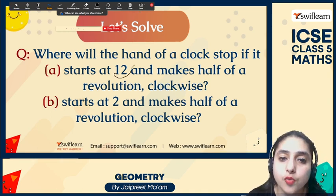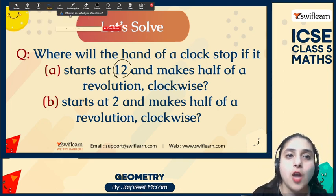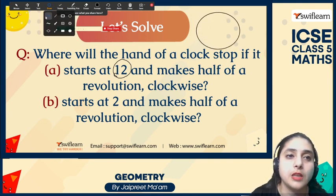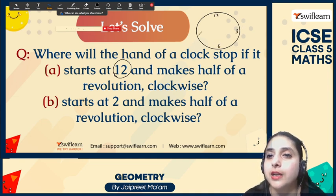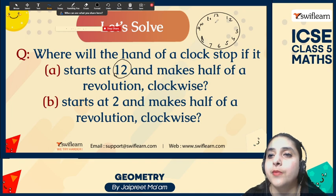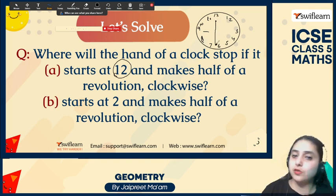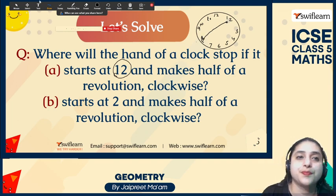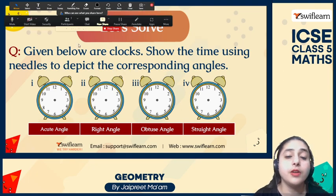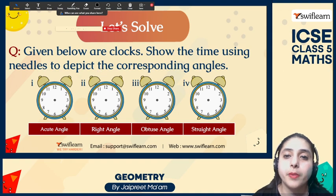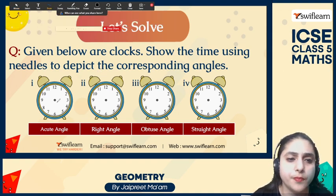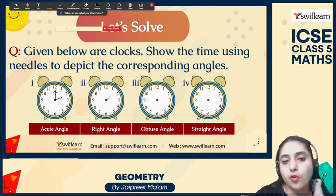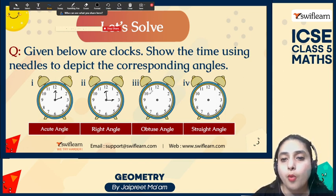Where will the hand of a clock stop if it starts at 12 o'clock and makes a half revolution? Let's draw a clock: 12 at top, 6 at bottom, 3 on the right, 9 on the left. Half revolution from 12 means the needle will stop at 6 o'clock. Starting from 2, a half revolution will stop at 8. The clocks below show the time using needles to depict corresponding angles — an acute angle is shown at 2 o'clock, and a right angle at 3 o'clock or 9 o'clock.